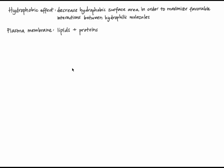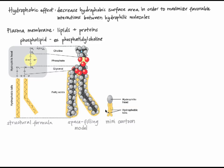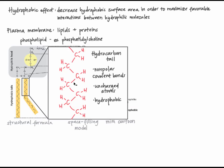Cell membranes as well as internal membranes, those that enclose organelles, are made of lipids and studded with proteins. The majority of lipids in membranes are phospholipids, which are molecules with both a hydrophilic region and a hydrophobic region. Shown here is phosphatidylcholine, one of the most common phospholipids in plasma membranes. Phospholipids have one or two hydrophobic tails made up of only carbon and hydrogen atoms connected by nonpolar covalent bonds. These are called hydrocarbon tails. The atoms in hydrocarbon tails are uncharged and thus hydrophobic.